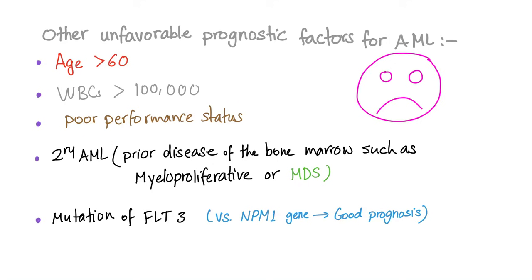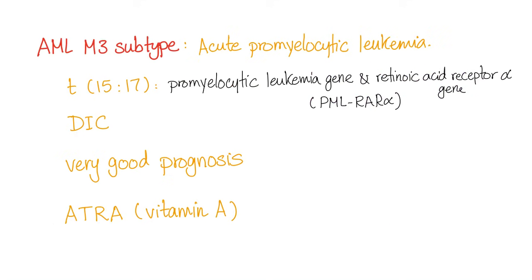The NPM1 gene mutation carries good prognosis. Very important for your exam: the M3 subtype of AML, acute promyelocytic leukemia, has the t(15;17) translocation and is associated with DIC. It carries very good prognosis because we can treat it with vitamin A — all-trans retinoic acid, or ATRA.